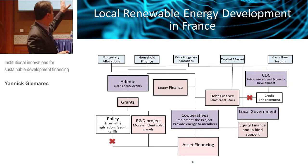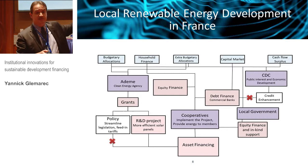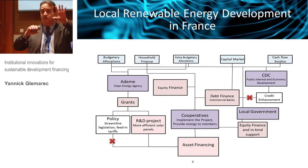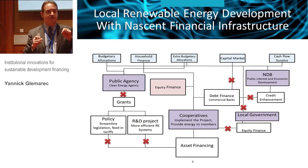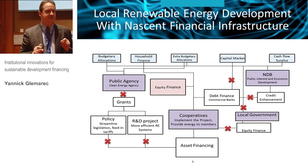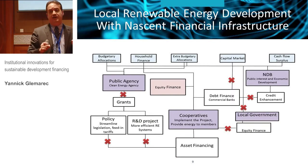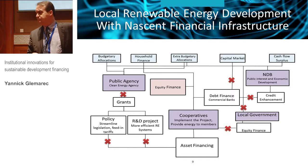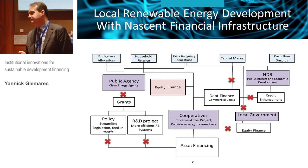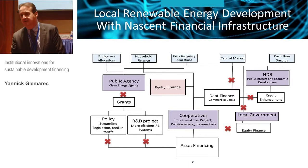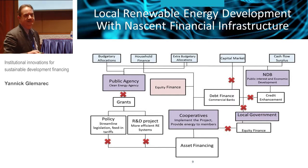So the result: you have the same institutions, the same configuration, but some very tiny differences — and the result is that in one country you have 800 cooperatives, and in the other you have eight. One hundred times less.